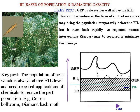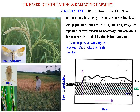In the diagrammatic view shown here, it is illustrated that the general equilibrium position of the key pest always lies well above the EIL. Major pest: the general equilibrium position is close to the EIL, and in some cases both may be at the same level. So the population crosses EIL quite frequently and repeated control measures are necessary. However, economic damage can be avoided by timely interventions. Leaf hoppers and whitefly in cotton, brown plant hopper, green leaf hopper, and yellow stem borer of rice are examples of major pests.